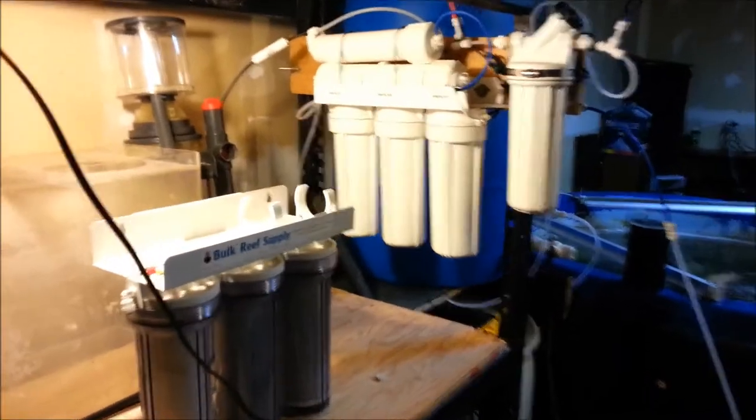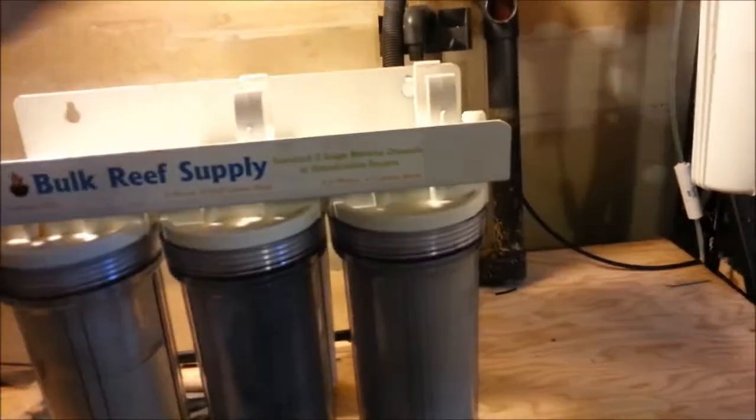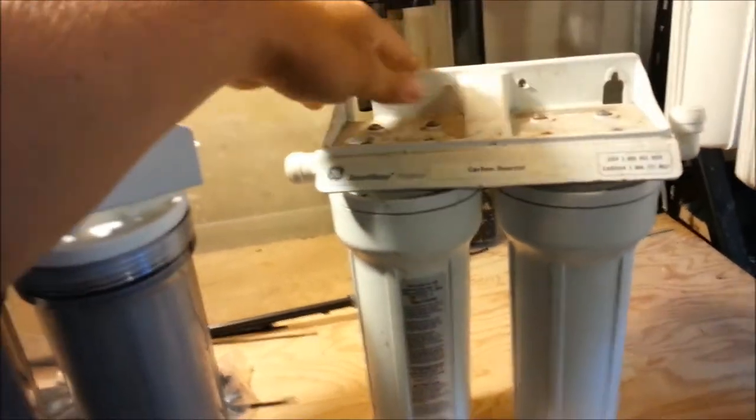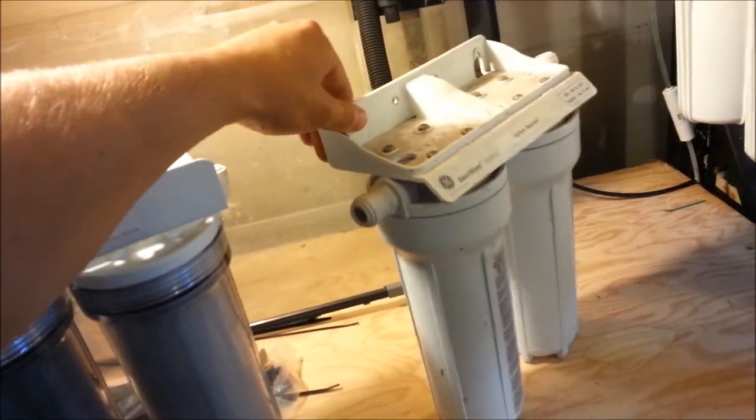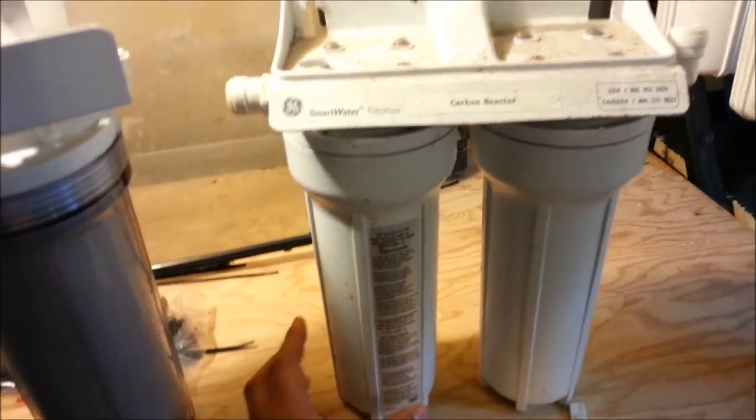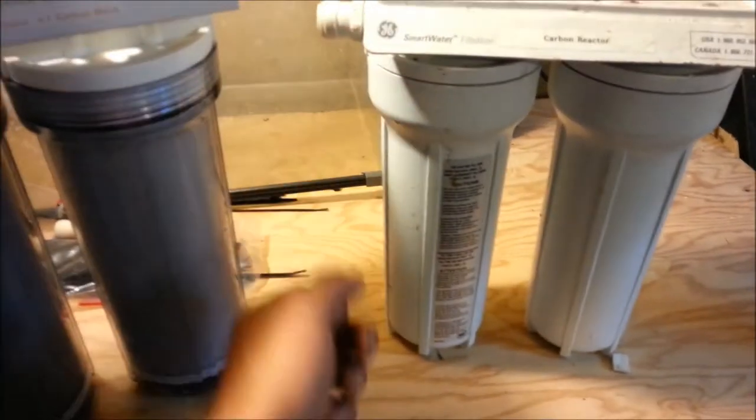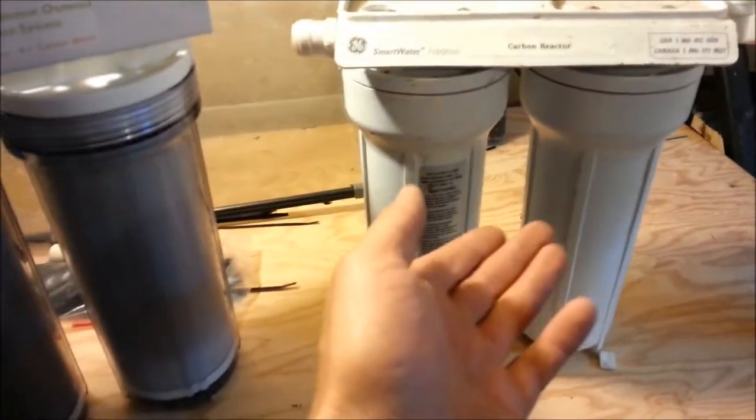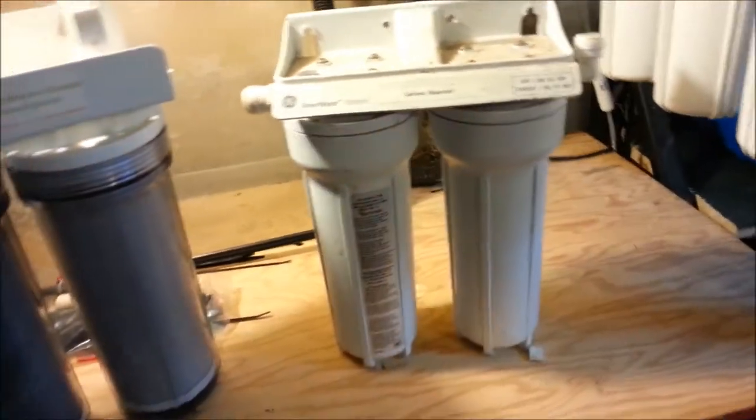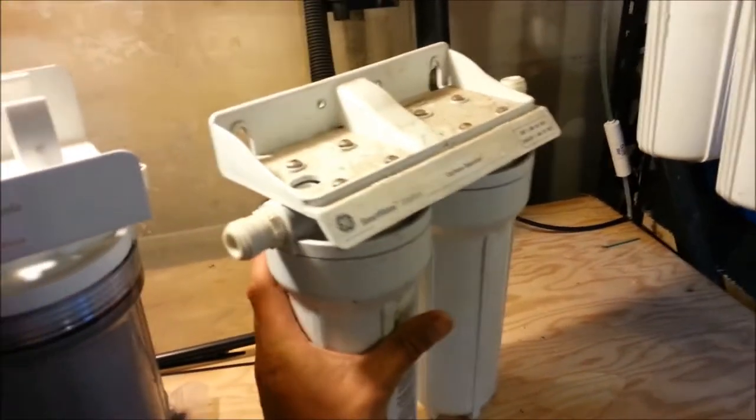Remember, check out thrift stores. Even for these right here, check this out. This is an under-the-water faucet unit right here. All you got to do is, for $9 on bulk reef supply, you can purchase the cartridges in here and fill it up with carbon or GFO. Unfortunately, you wouldn't be able to see the GFO tumble, but you can build your own carbon reactor. And I got this for $12, and I'm sure I could have got it for a lot cheaper.